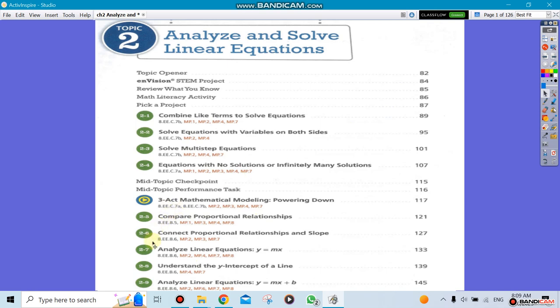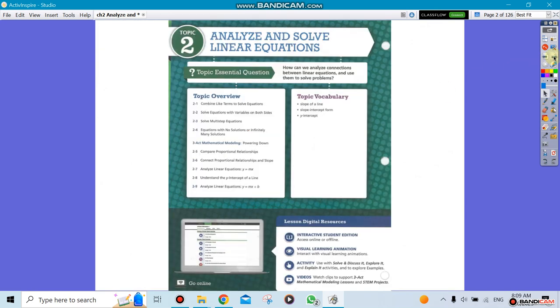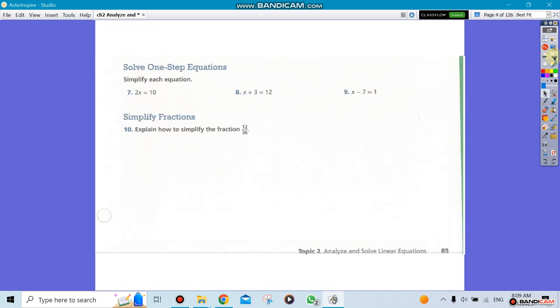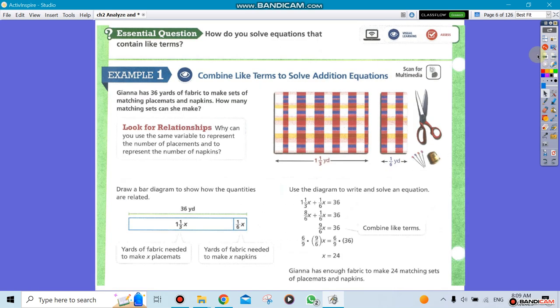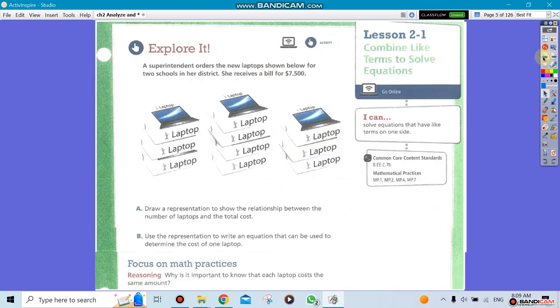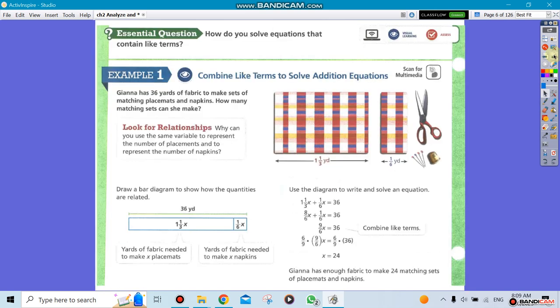For this week, we're going to start with section 1, which is combining like terms. This is an easy one. You can see there's an X here and an X here. Those two Xs are similar to each other, so that's what we call like terms.